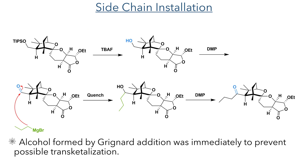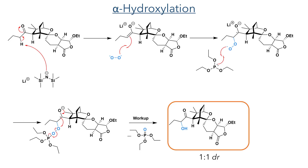Moving forward, the TIPS group was deprotected using tetrabutylammonium fluoride. Once again, a Dess-Martin periodinane oxidation was employed to oxidise the alcohol to an aldehyde. A Grignard reaction was then performed to install the propyl group. The resulting alcohol was immediately oxidised again using DMP to form the ketone. This was done to prevent a possible trans-ketalisation, which would be similar to the epimerisation reaction, where the newly formed secondary alcohol would react in place of the lactone hydroxyl group.